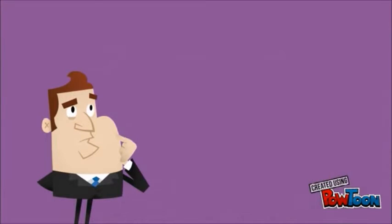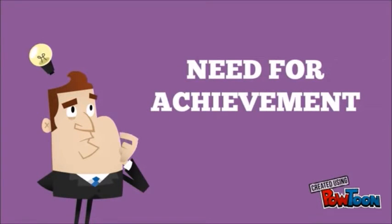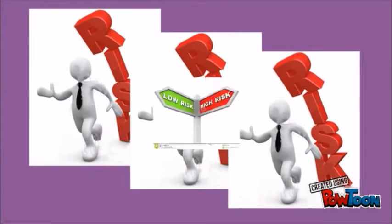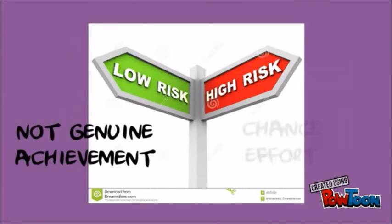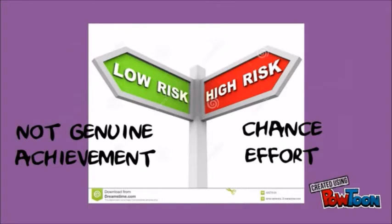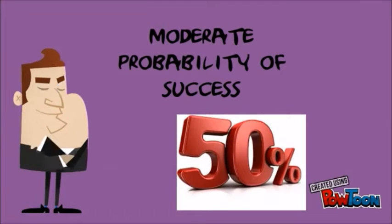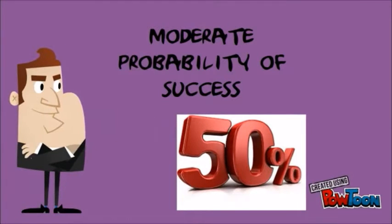People with a high need for achievement seek to excel and thus tend to avoid both low-risk and high-risk situations. Achievers avoid low-risk situations because the easily attained success is not a genuine achievement. In high-risk projects, achievers see the outcome as one of chance rather than one's own effort. High-achiever individuals prefer work that has a moderate probability of success, ideally a 50% chance.